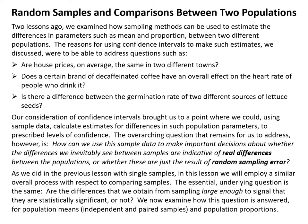Or is there a difference between the germination rate of two different sources of lettuce seeds? Our consideration of confidence intervals brought us to a point where we could, using sample data, calculate estimates for differences in population parameters to prescribed levels of confidence. The overarching question that remains to address, however, is how we can use sample data to make important decisions about whether the differences we inevitably see between samples are indicative of real differences between the populations, or whether these are just the result of random sampling error.